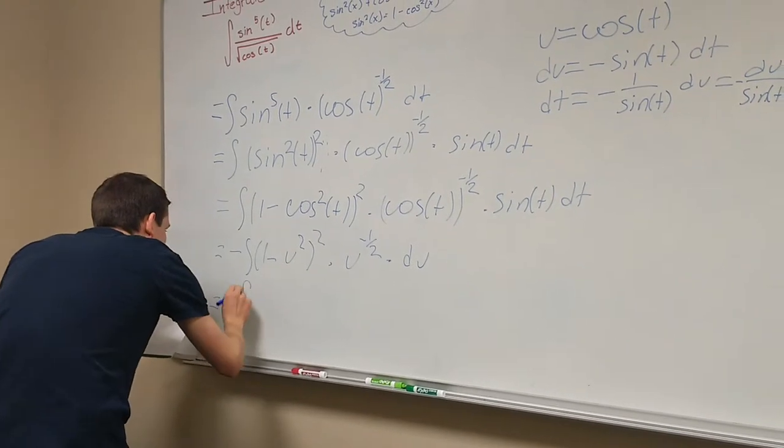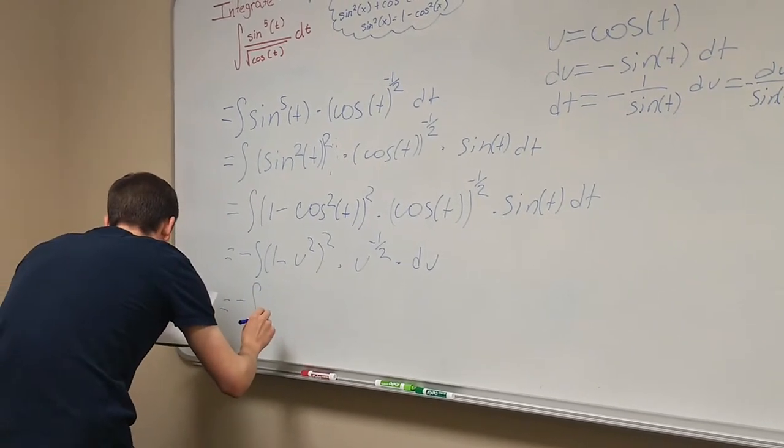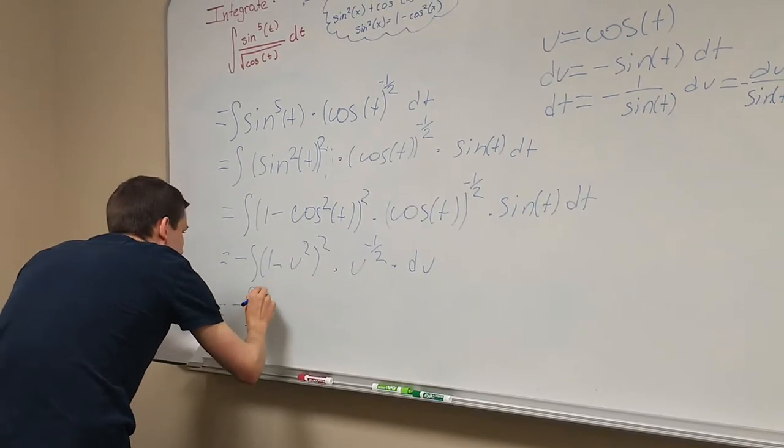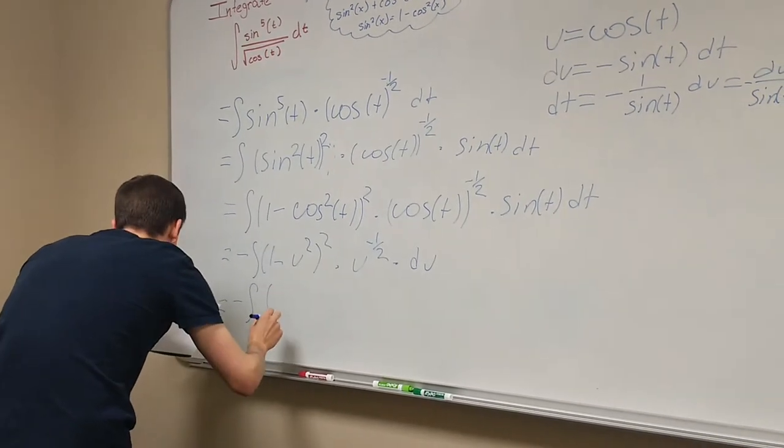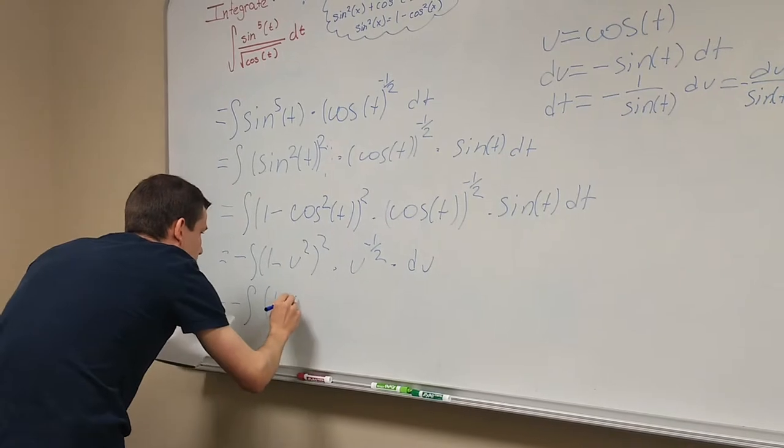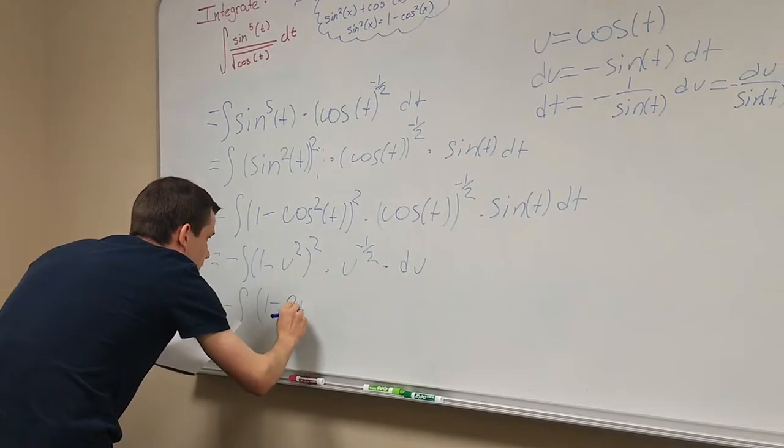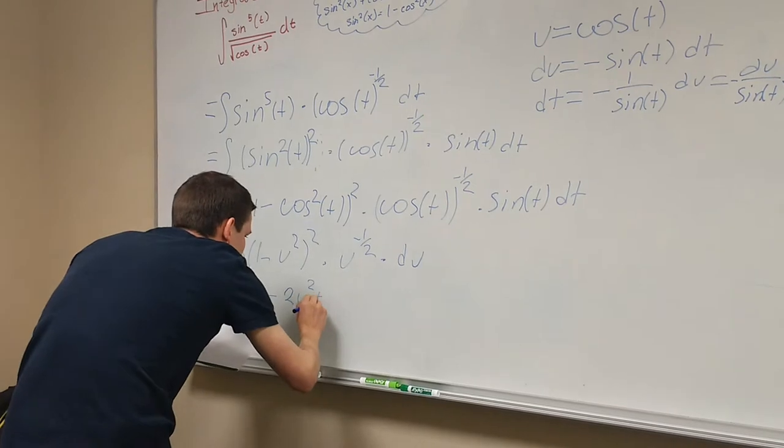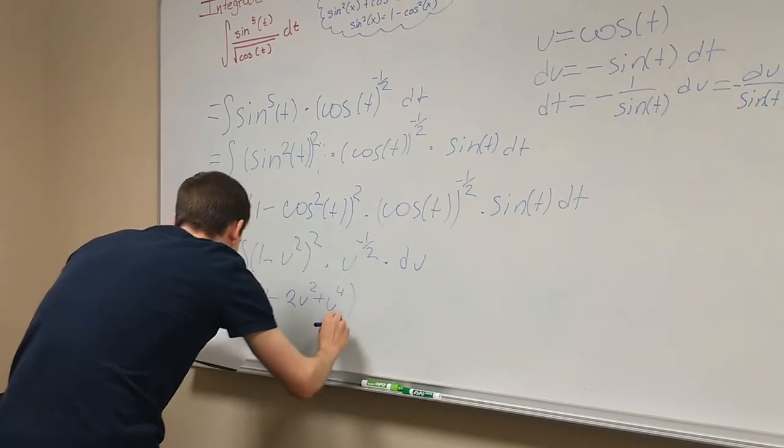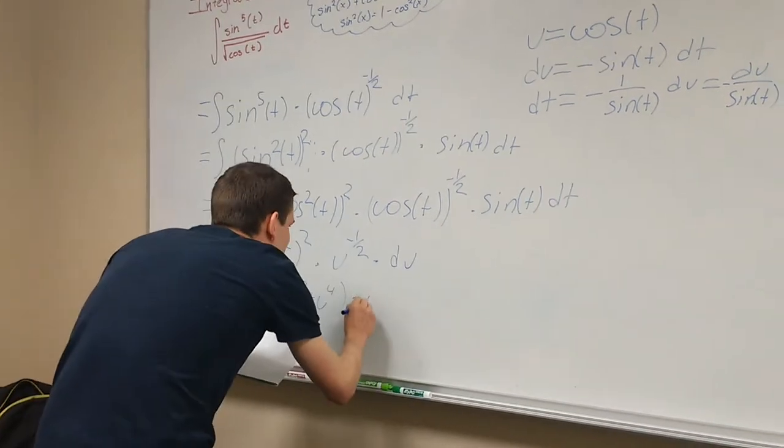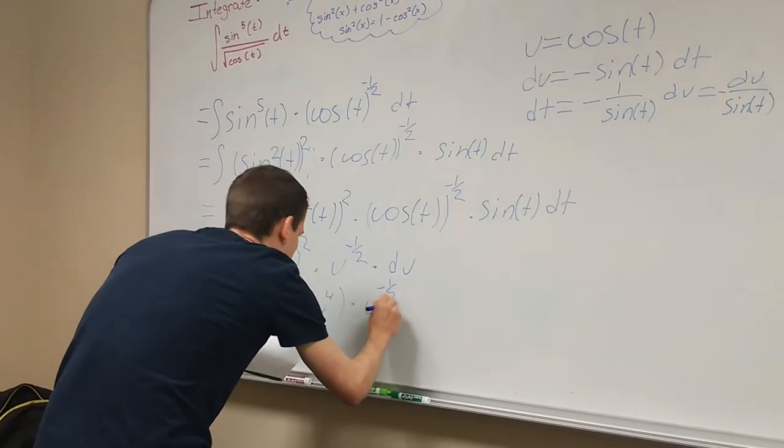And then negative integral. We're going to distribute the square. So it's one minus two u squared plus u to the fourth power, and multiply by u to the negative one half.